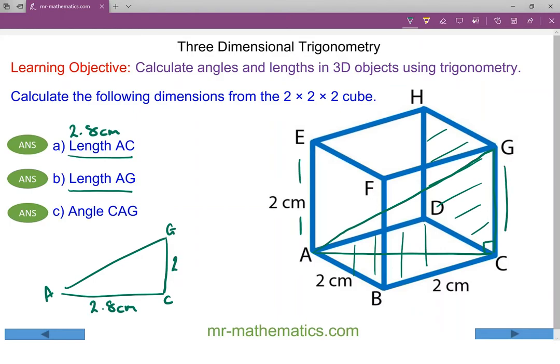So again we can use Pythagoras's theorem to work out the hypotenuse AG. So AG squared equals 2.8 squared which is AC plus 2 squared which is CG. So AG squared is approximately, we add these two together we get approximately 12. And we do the square root of 12 to work out AG and that is approximately 3.46 centimeters.